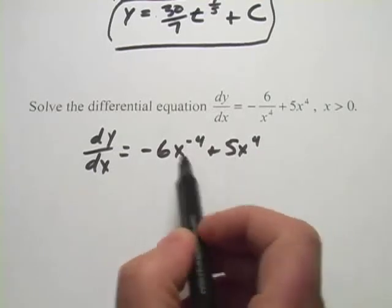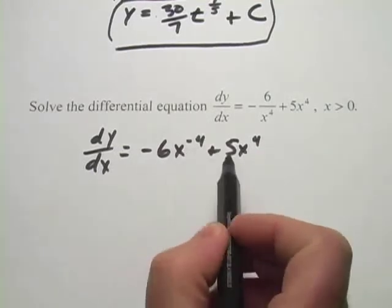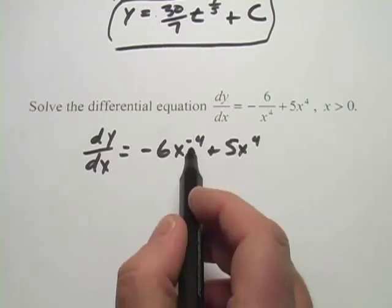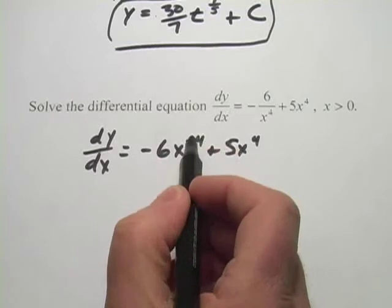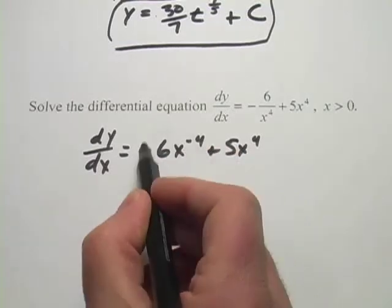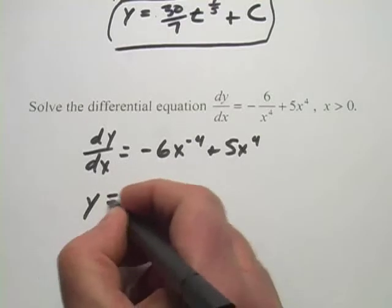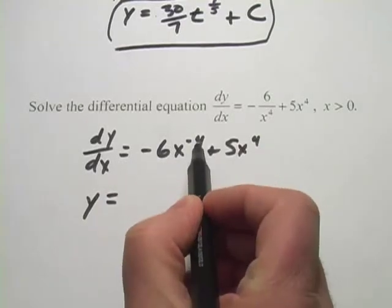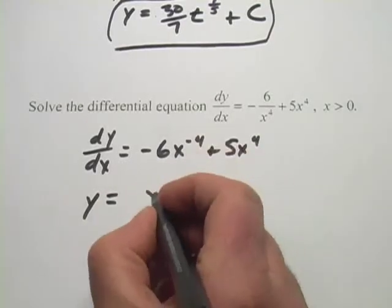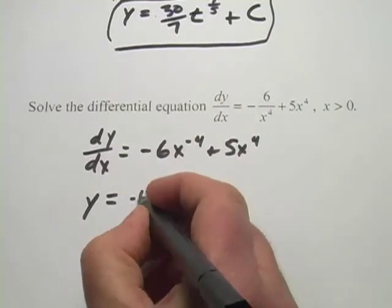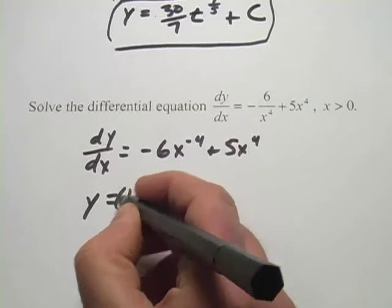The polynomial will take each piece, each term, and apply this reverse power rule to it. Remember, what we do is we raise the power by one and then we multiply by the reciprocal out front. So this first term, so we're getting y here, I raise negative four by one, I get negative three. So we're going to get x to the negative three. The reciprocal of negative three, and I've got my negative six out here, is a negative one-third.